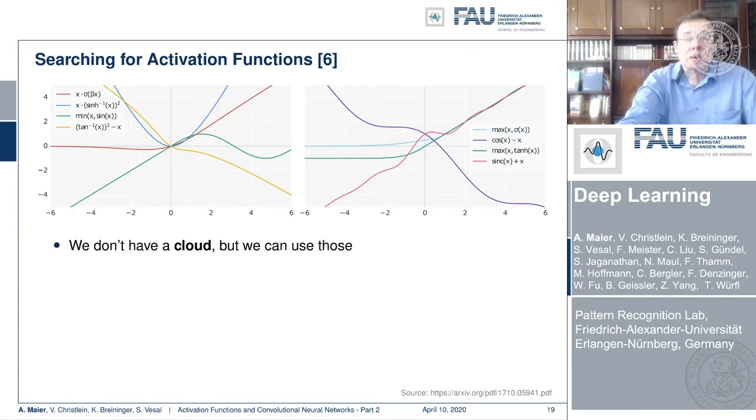So what can we see? These are activation functions that they found useful. So we can't do the procedure ourselves, but we can, of course, look at the results that they found. And here are some examples. And interestingly, you can see that some of the results that they produced resulted even no longer in convex functions. So very interesting results that they got.